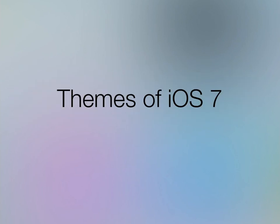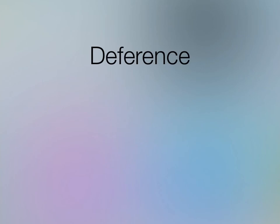Apple says there are three main themes of iOS 7 once you move past physicality and motion. First: Deference — the UI is meant to help users understand and interact with the content, but not compete with it. So the UI should defer to the content.